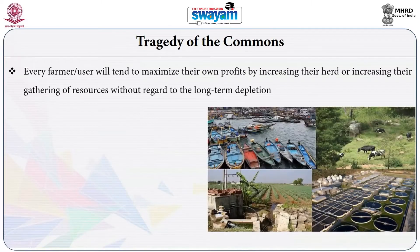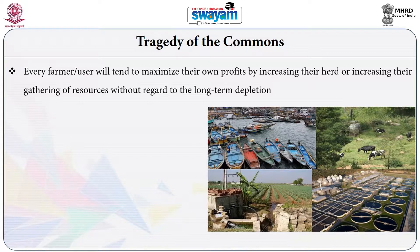By commons here we mean common land or any kind of common resource available for multiple users. If it is a common land, it is available to all for grazing animals, gathering wood, etc. If it is a common water resource, then it is available for all to irrigate their farms, dump waste, fishing, or any kind of common uses.